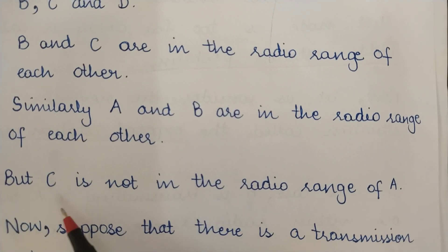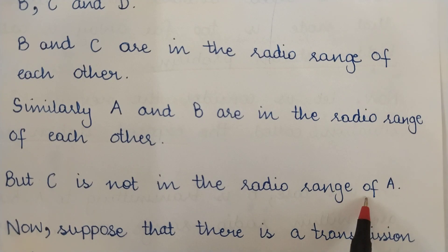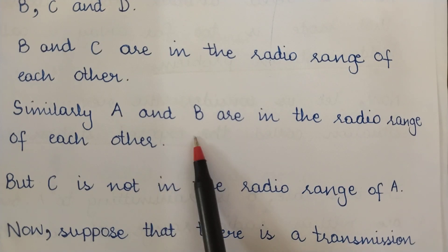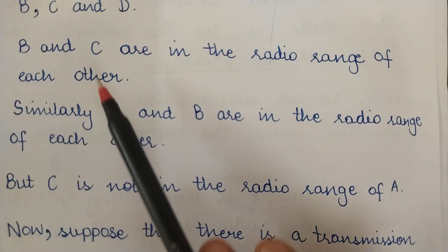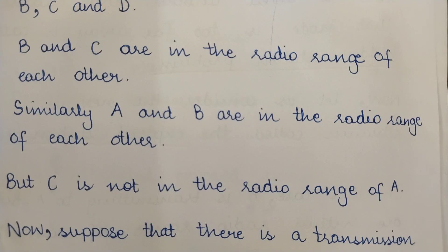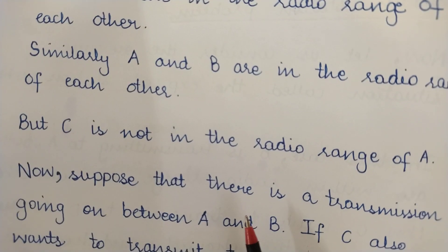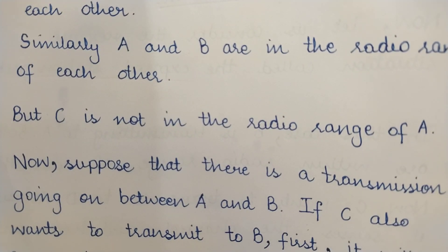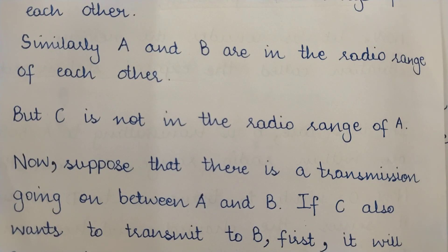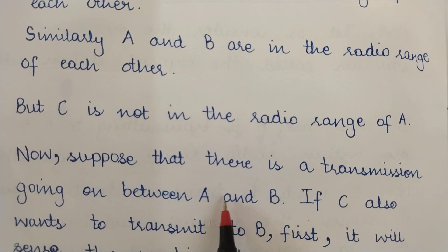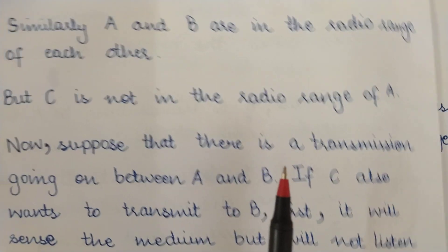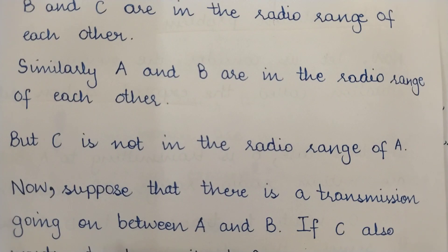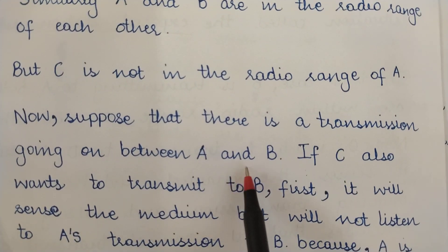In that case, C is not in the radio range of A. So B and C are in the radio range of each other, A and B are in the radio range of each other, but C is not in the radio range of A. Now suppose there is a transmission going on between stations A and B, because both of them are in the radio range of each other — hence they can communicate.